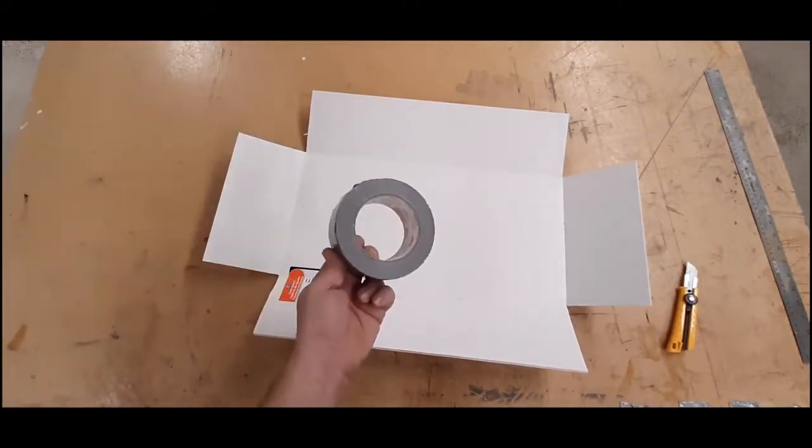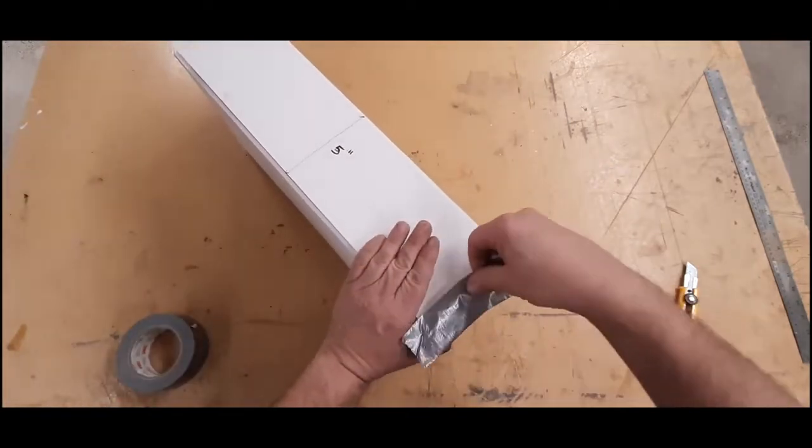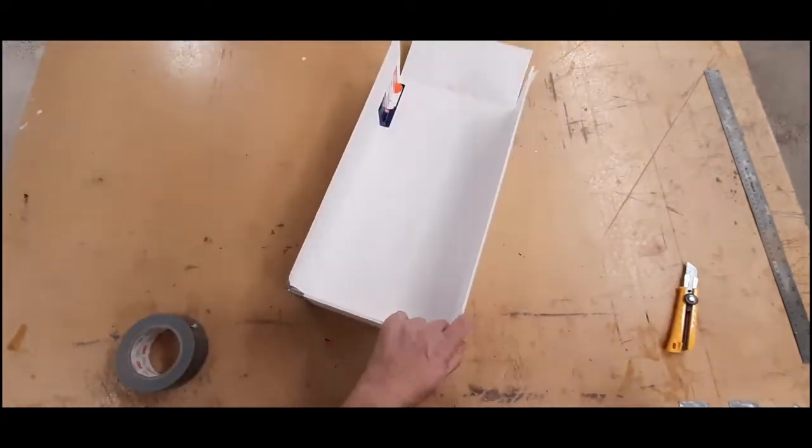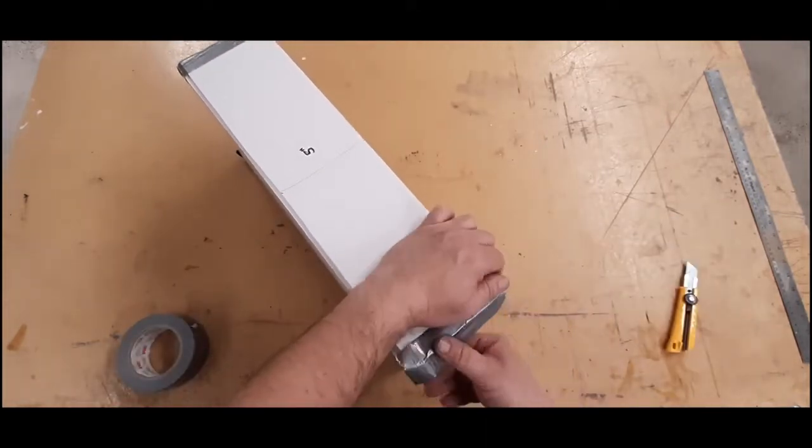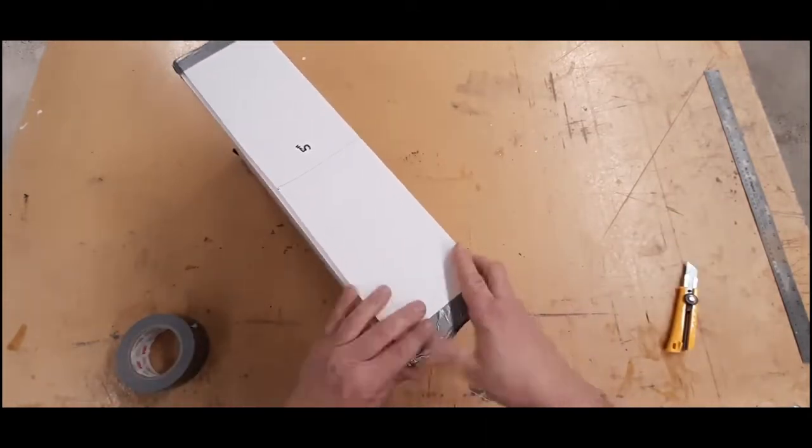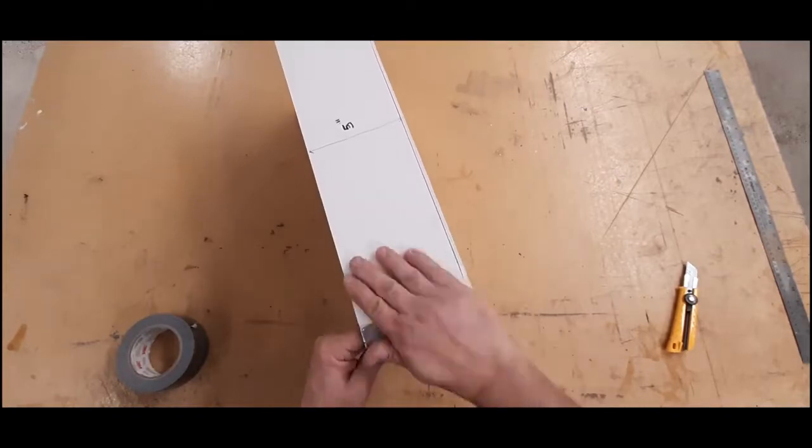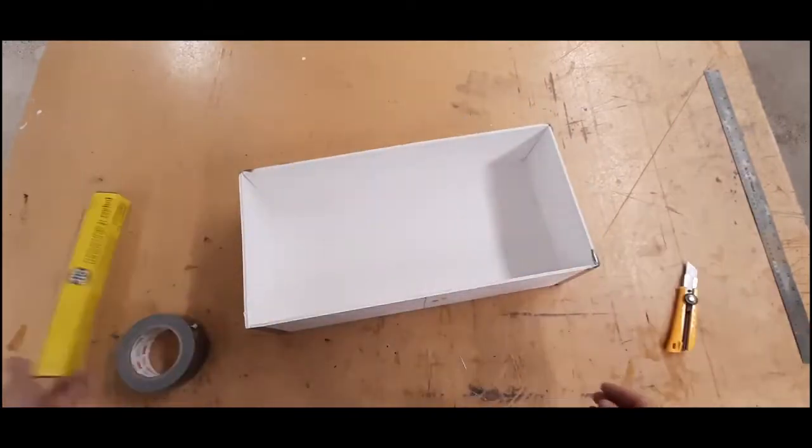Take some tape and then seal up the corners. Once the corners are sealed, you can then line the inside of the box with aluminum foil.